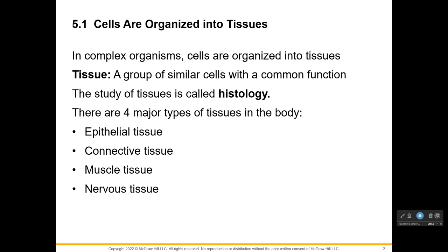There are four major types you'll need to know well. Epithelial tissue — look at that prefix 'epi,' which means 'on top of,' so we see it lining the inside of hollow things or on the outside of things. Connective tissue connects the whole body and is the most common tissue by weight. Muscle tissue and nervous tissue you've probably heard of.